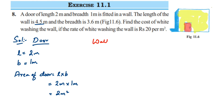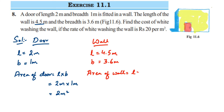Similarly, for the wall: length = 4.5 meters and breadth = 3.6 meters. Area of wall = length × breadth = 4.5 × 3.6 = 16.2 meter square.